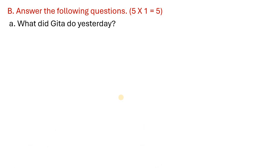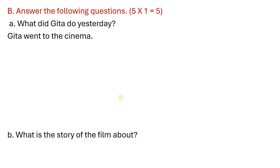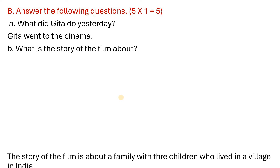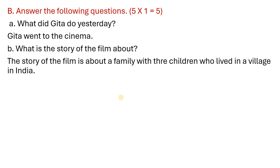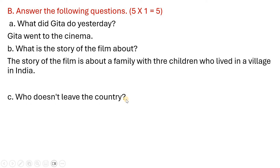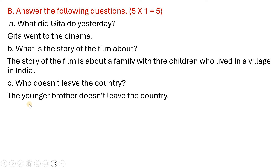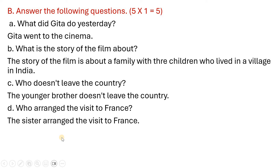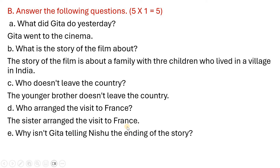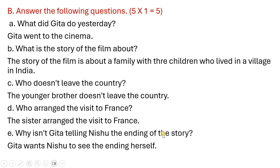Question and answer section: What did Gita do yesterday? Gita went to the cinema yesterday. What is the story of the film about? The story of the film is about a family with three children who lived in a village in India. Who doesn't leave the country? The younger brother doesn't leave the country. Who arranged the visit to France? The sister arranged the visit to France. Why isn't Gita telling Mishu the ending? Because she wants Mishu to see the ending herself.